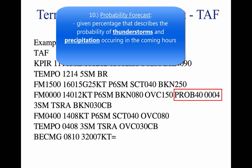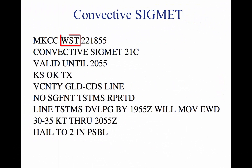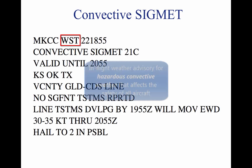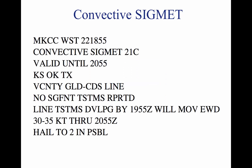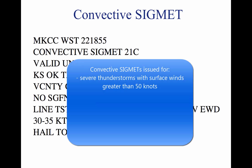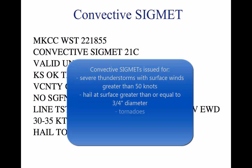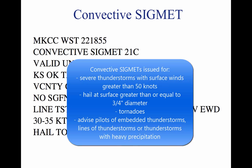A convective SIGMET (WST) is an in-flight weather advisory issued for hazardous convective weather that affects the safety of every flight. Convective SIGMETs are issued for severe thunderstorms with surface winds greater than 50 knots, hail at the surface greater than or equal to three-quarters inch in diameter, or tornadoes. They are also issued to advise pilots of embedded thunderstorms, lines of thunderstorms, or thunderstorms with heavy or greater precipitation affecting 40% or more of a 3,000-square-foot or greater region.